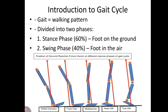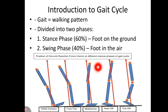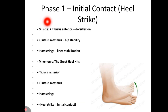Here is a visual demonstration of the phases of gait. The first is initial contact, the second is foot flat, the third is mid stance, the fourth is heel off, and the fifth is toe off.